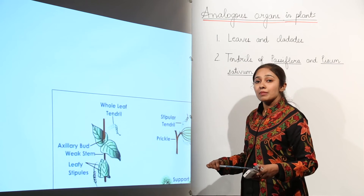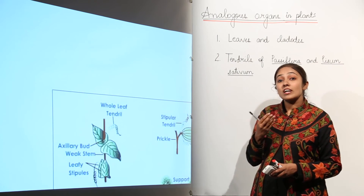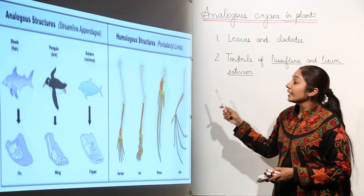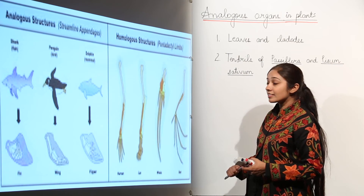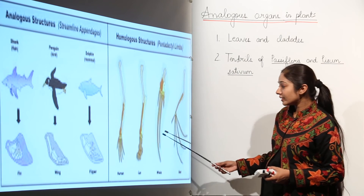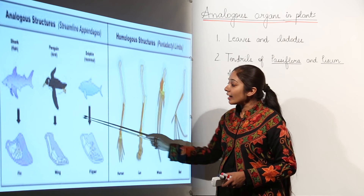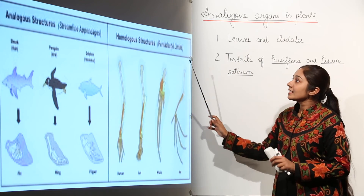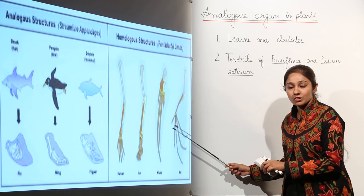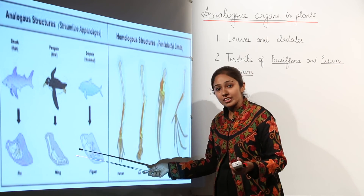Now let us recall the difference between homologous and analogous organs. In the case of homologous organs, the basic structure is the same but the functions are different. In the case of analogous organs, the basic structure is different but the functions are the same. For example, pentadactyl limbs are homologous — same basic structure, different functions in humans, birds, and frogs. But analogous organs like flippers in different animals show different structures performing the same function of swimming.